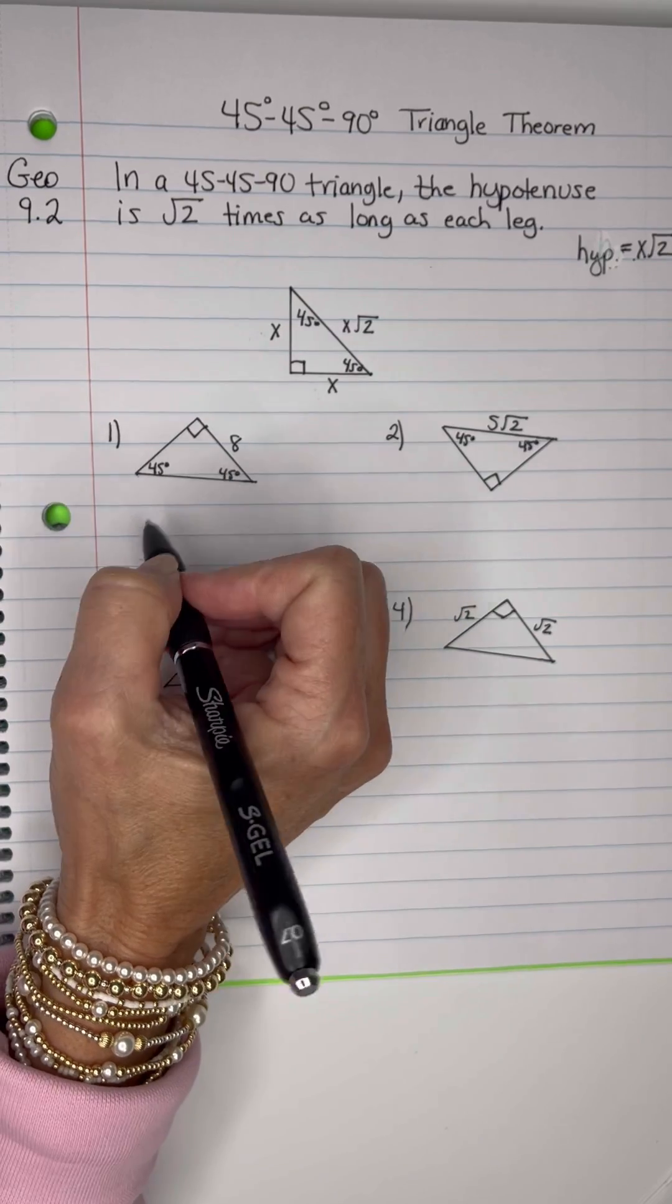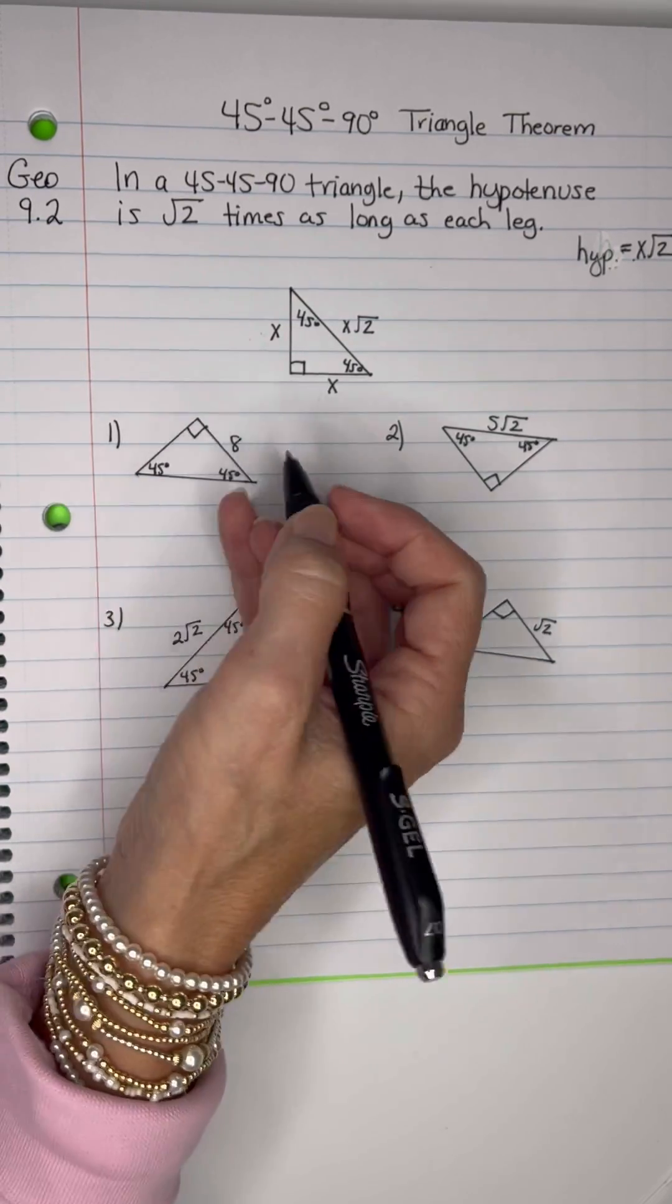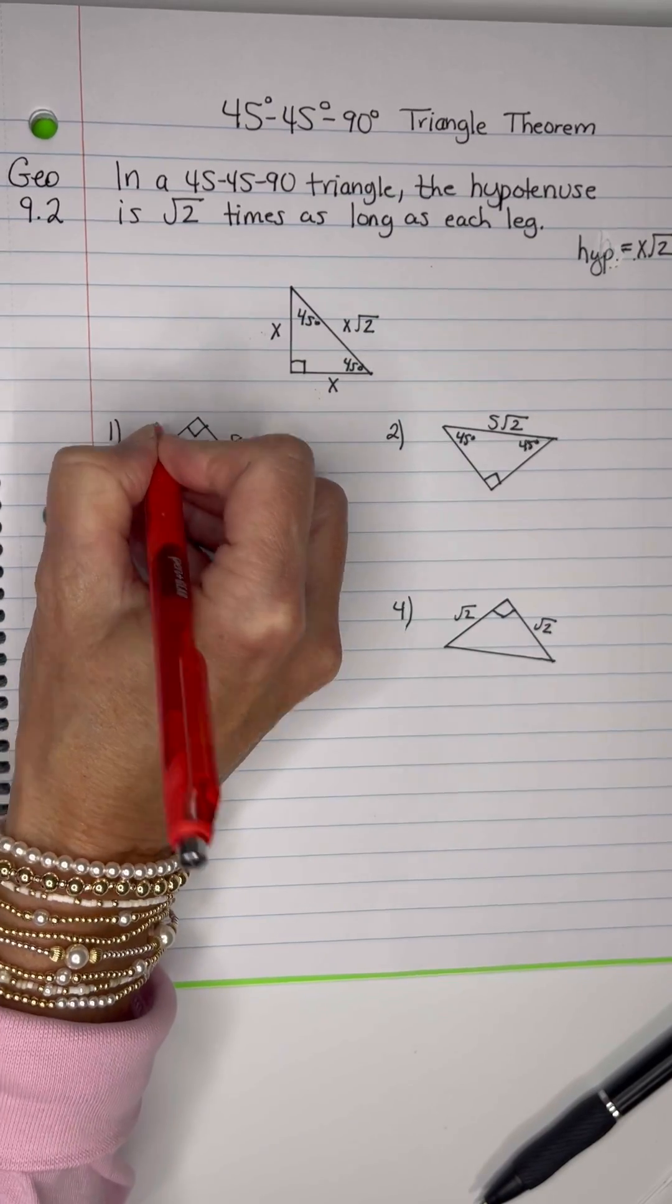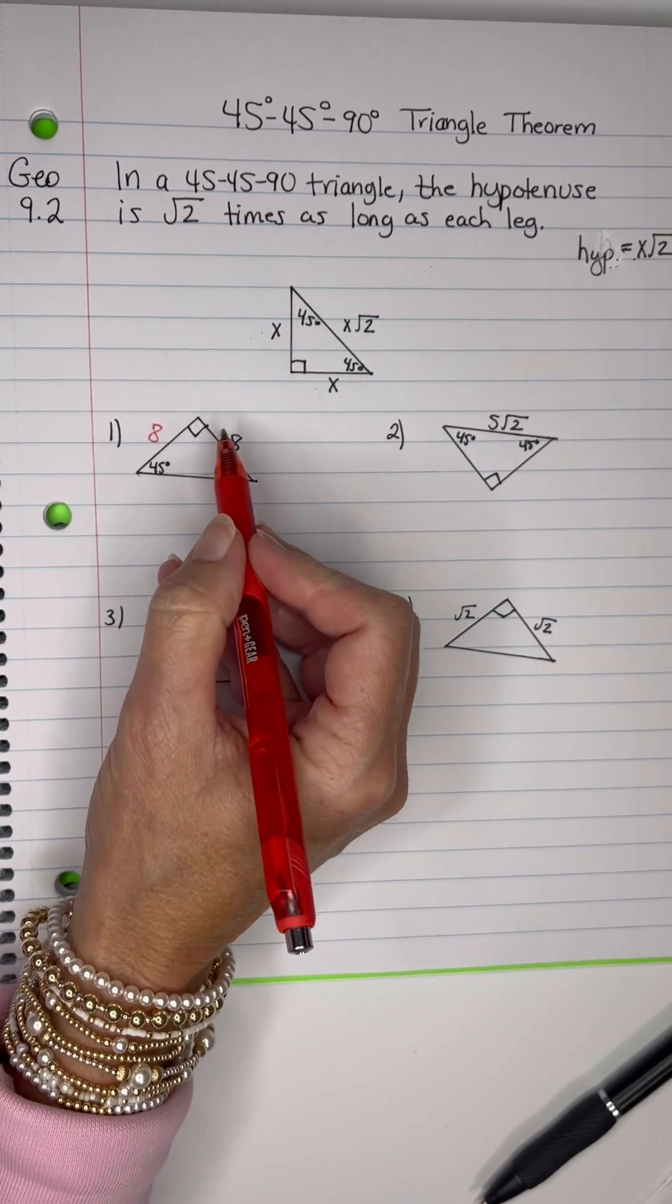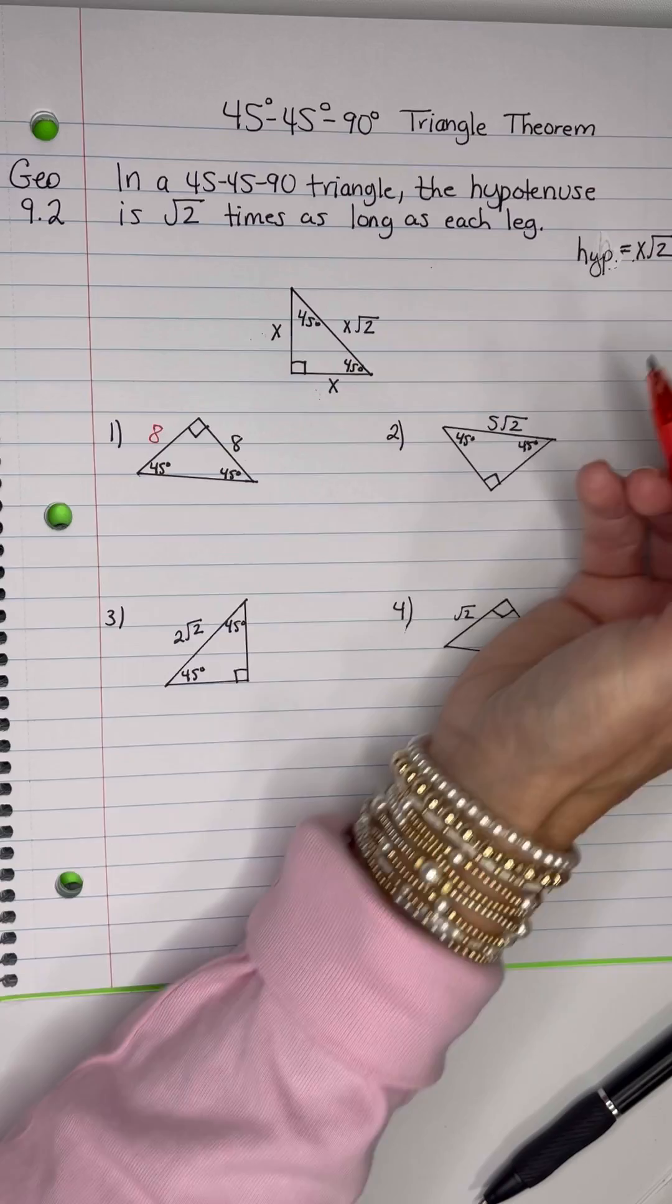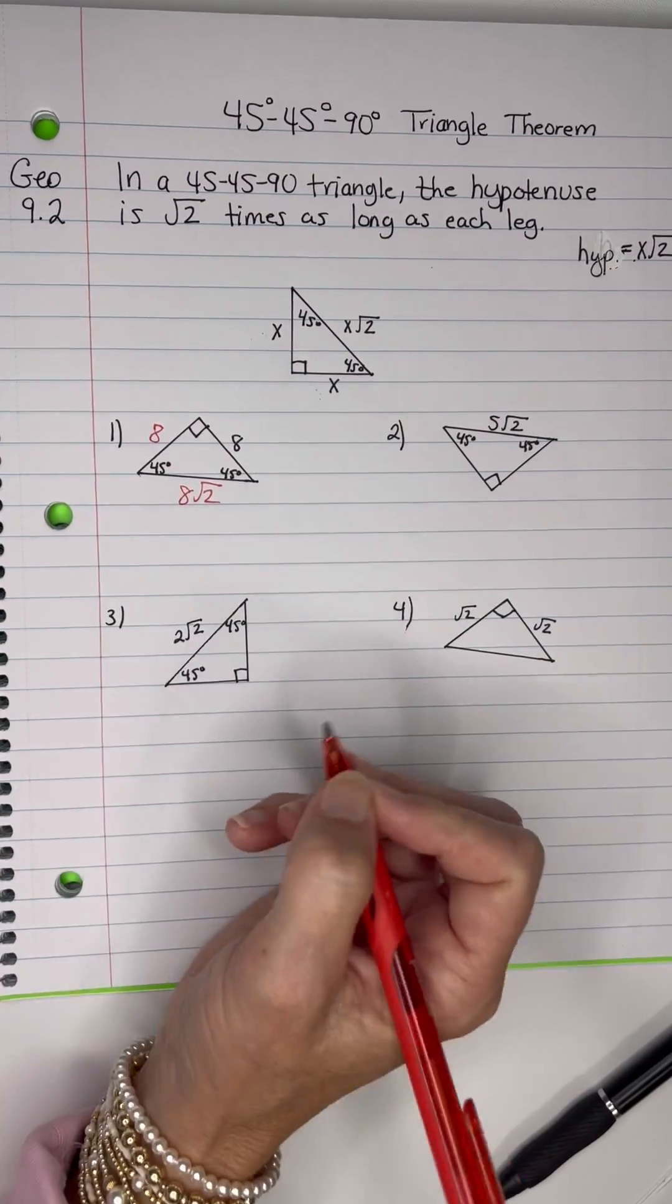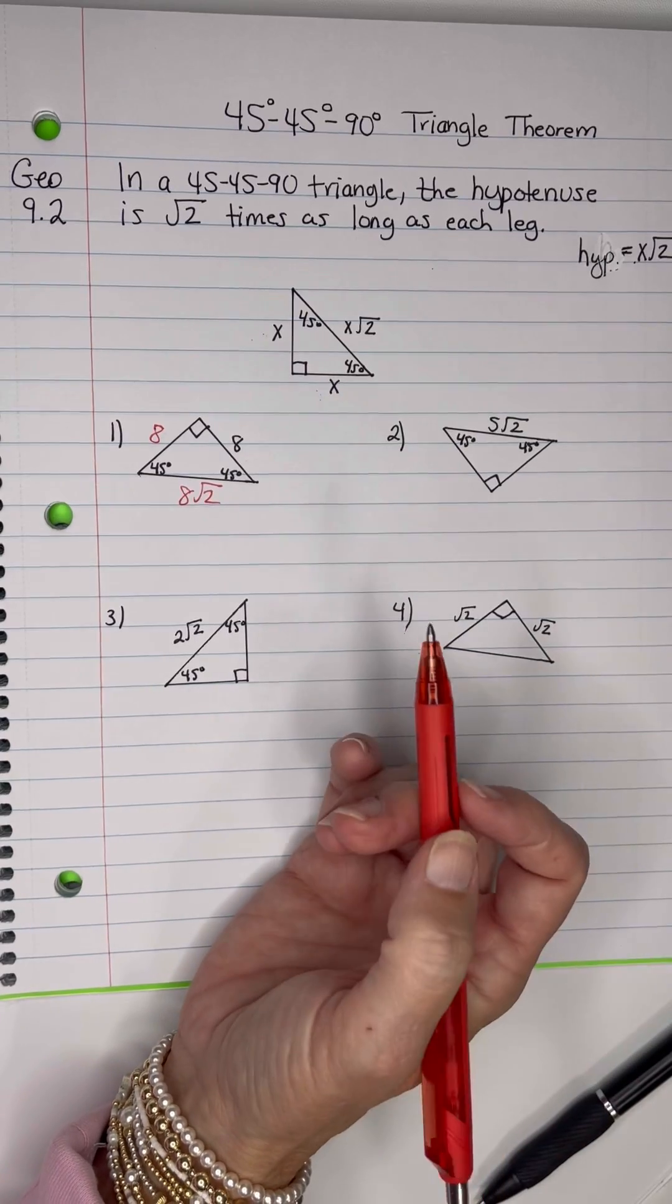So here I have a 45-45-90 triangle. I know my legs are the same size, so I'm going to put 8 right here. And then the hypotenuse will be the leg times root 2. So 8 root 2. As easy as that, we don't have to use the Pythagorean theorem.